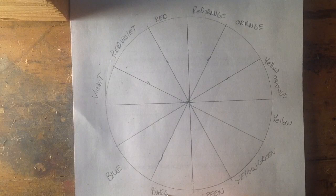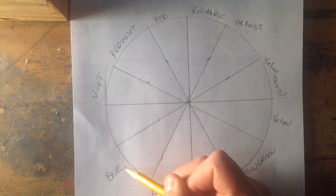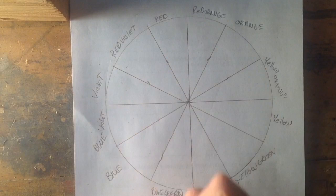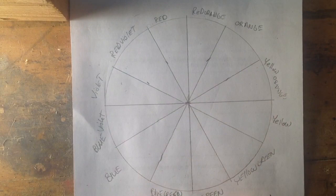Blue, green. Whoops. There we go. And blue, violet. All right, so I have them all labeled around the edge of my wheel now.